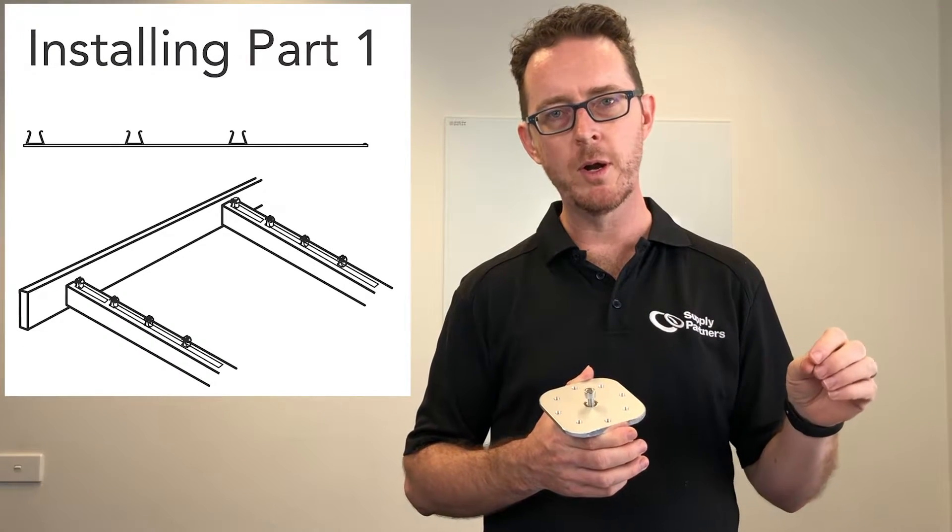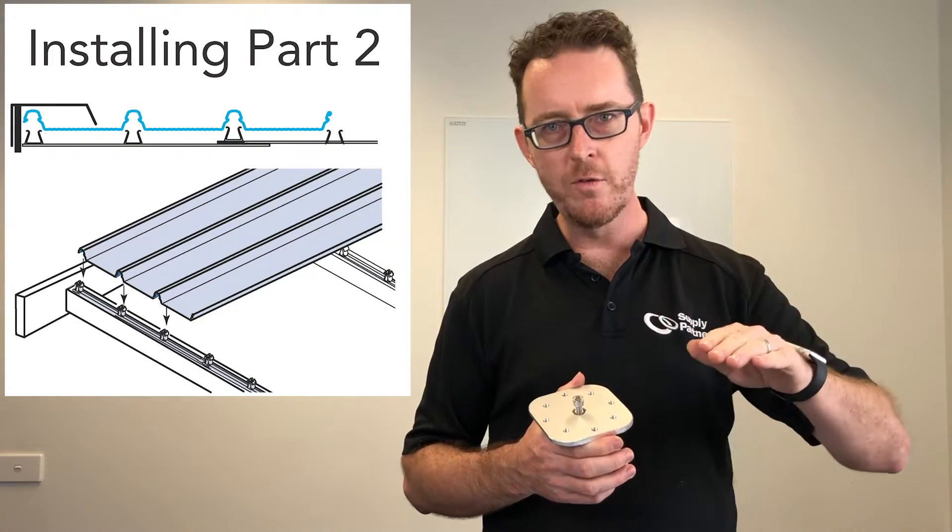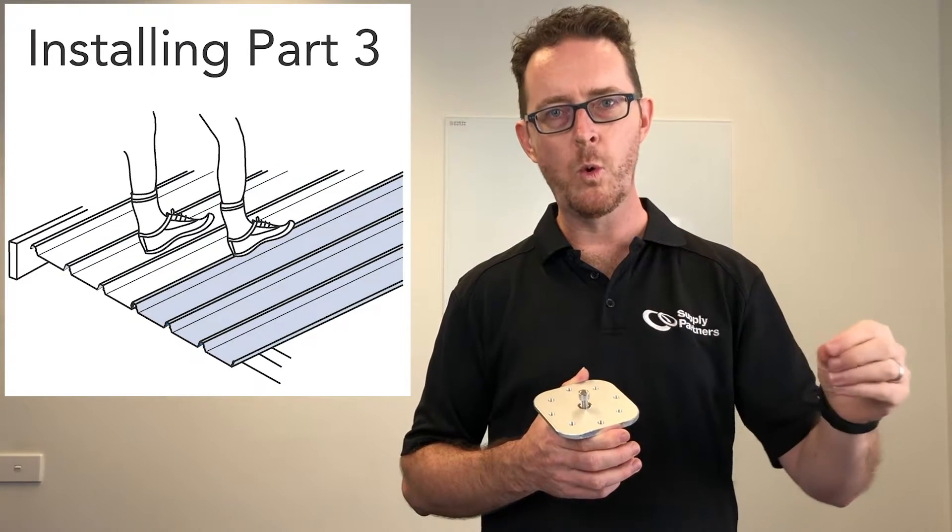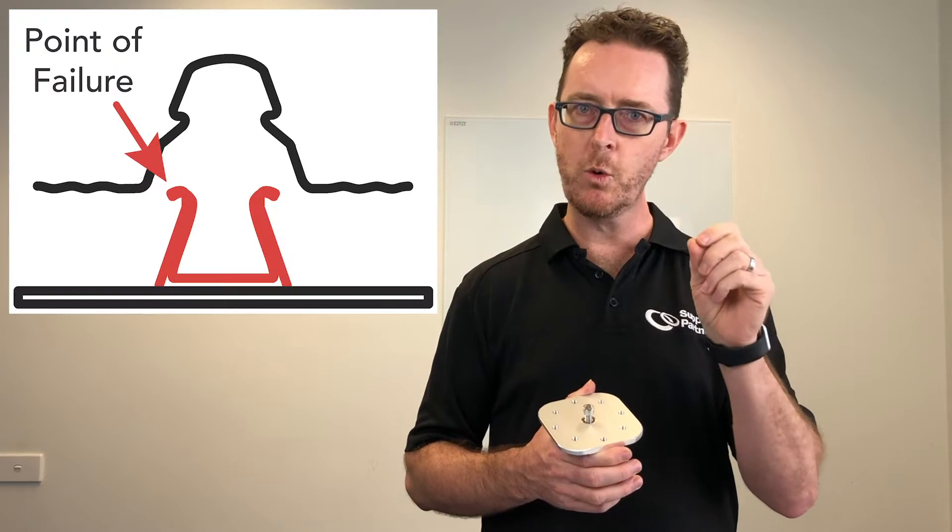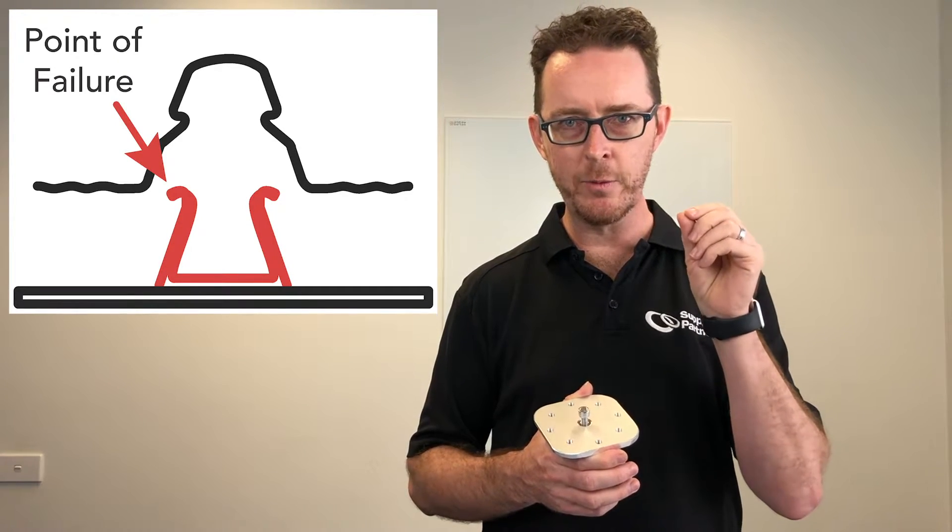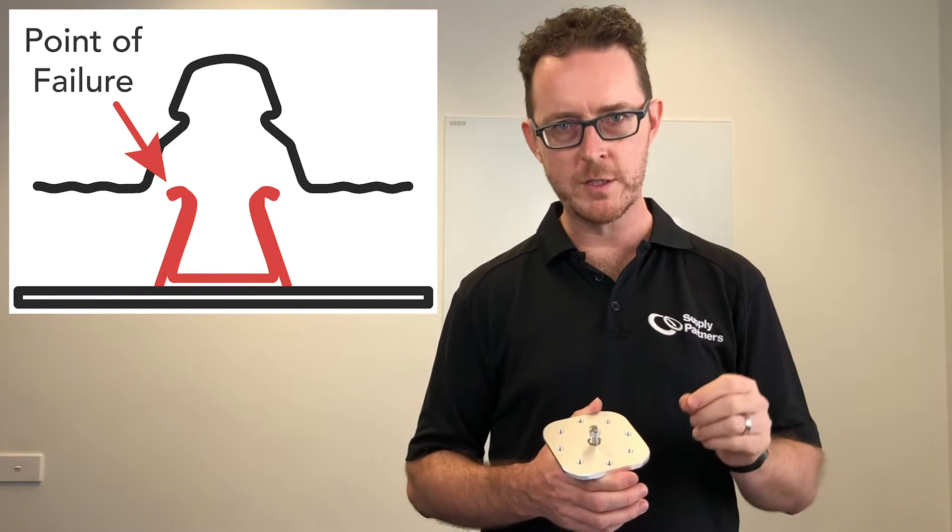First of all the clips are put down onto the purlins, then the sheet is laid over the clips and the installer then walks through and presses the sheet down over the clips. And those small clips underneath the sheet are the weak point of the overall installation.